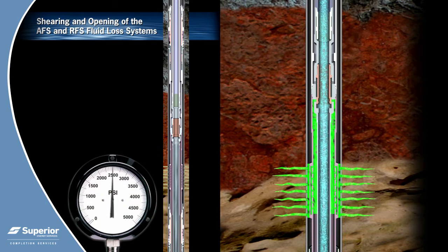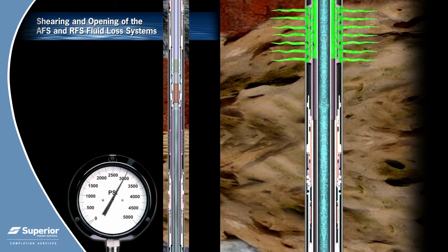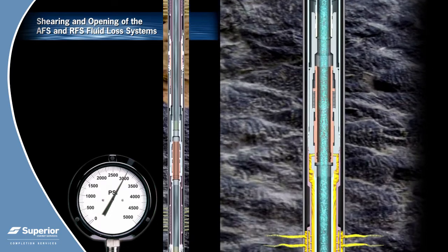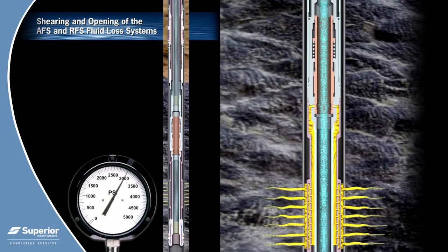Internal tubing pressure will actuate the annular flow valve, opening the annular flow path while maintaining tubing pressure integrity. Internal tubing pressure will also initiate actuation of the radial flow valve. The actuation pressure unlocks the valve but does not yet open the flow path from the lower zone into the isolation tubing.